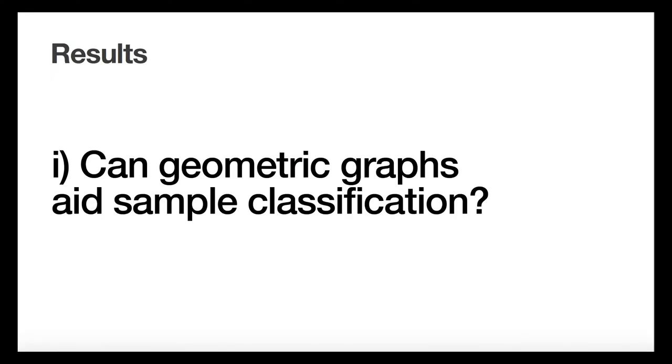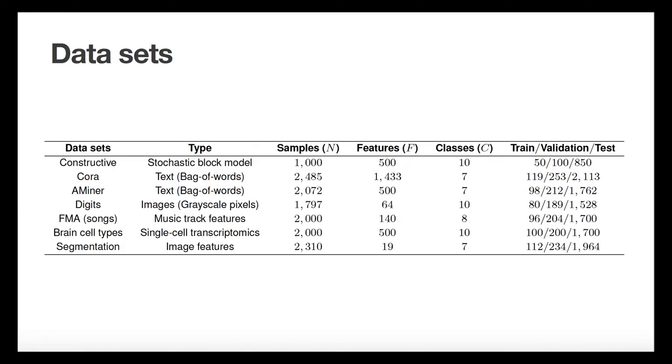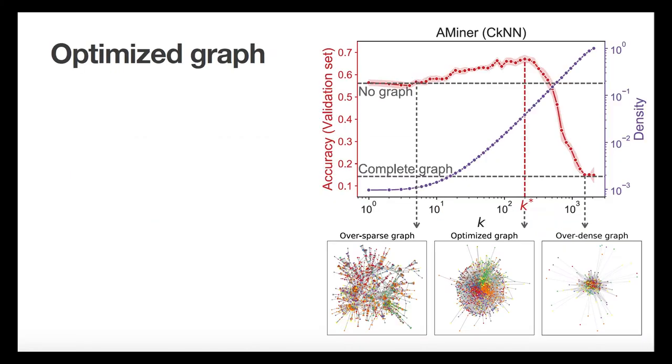To examine the improvements in classification performance induced by feature-derived graphs, we perform extensive computations on seven datasets from a variety of disciplines, using those four well-known geometric graph construction methods to extract graphs, which are then used within GCN classification. For each dataset and each graph construction, we sweep the edge density parameter generating geometric graphs from very sparse to very dense, and we search for the edge density that maximizes the average GCN classification accuracy on the validation set.